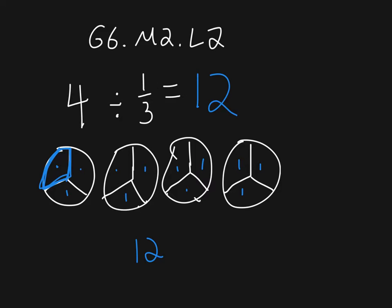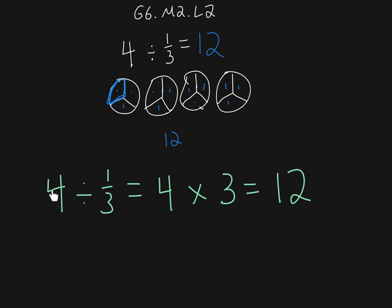So 4 divided by 1/3 should equal 12. So mathematically, what does that mean? Very simply, it means if I have four pies and I want to know how many thirds there are, then I can simply multiply my number of pies by the number of third pieces in each pie, which would be what we call a reciprocal.